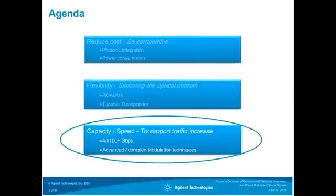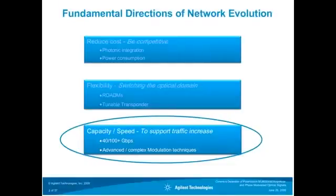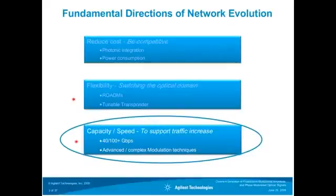The fundamental directions networks are taking right now include reducing cost, being cost effective, integration, and power consumption. People also look into flexibility — switching in the optical domain, all-optical networks, configurable optical add-drop multiplexers, and tunable transponders. But today's topic is about capacity and speed — how we can support the increase in traffic we are seeing in networks. Especially at 40 and 100 gigabit per second, people are talking about advanced and complex modulation techniques, and polarization multiplexing is one means to increase the efficiency of transmission of digital information.